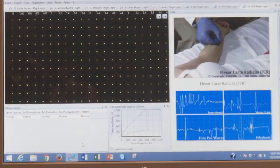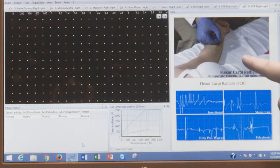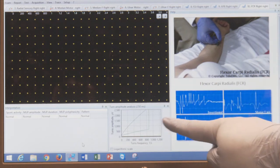When we're looking at the flexor carpi radialis, the picture here on the screen shows you where we insert the needle and also shows you the cloud and what the potentials should look like.